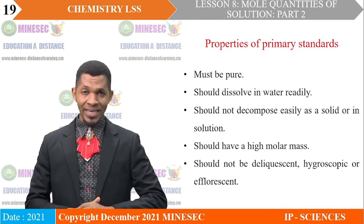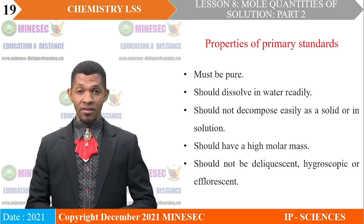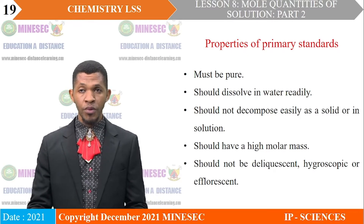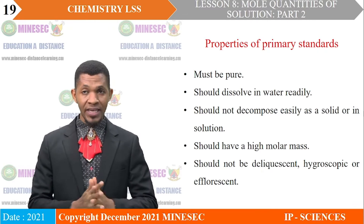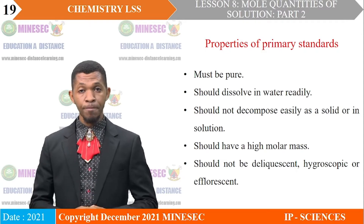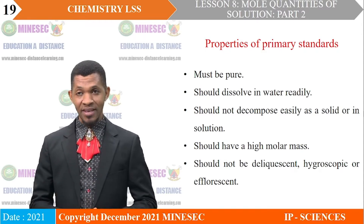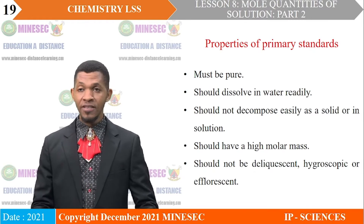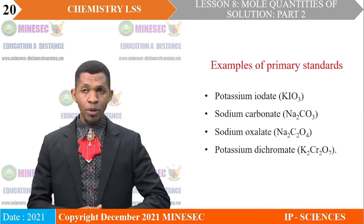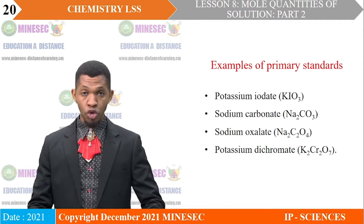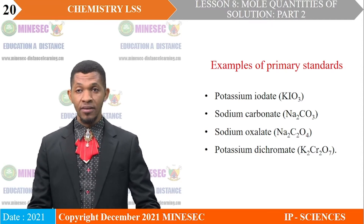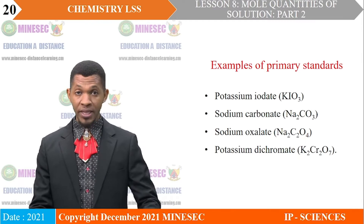Properties of primary standards: a primary standard must be pure, should dissolve in water readily, should not decompose easily as a solid or in solution, should have a high molar mass, and should not be deliquescent, hygroscopic, or efflorescent. Examples of primary standards are potassium iodate, sodium carbonate, sodium oxalate, potassium dichromate, and many others.